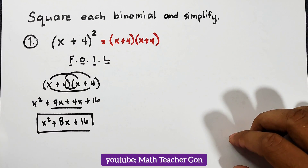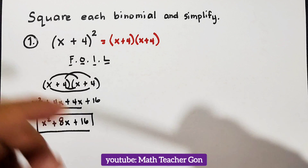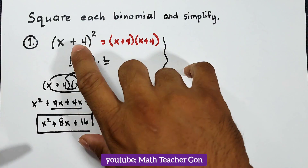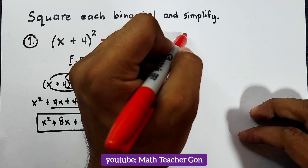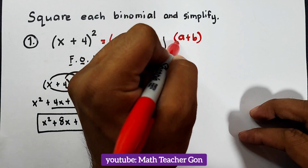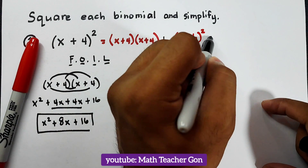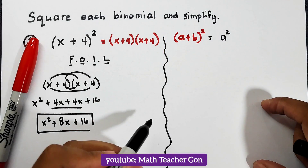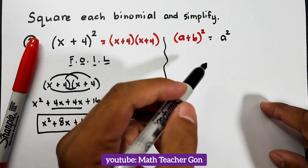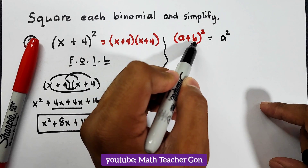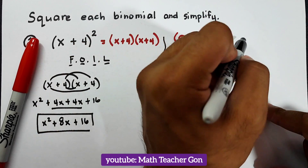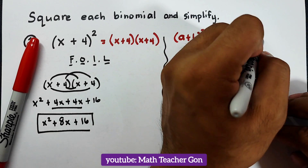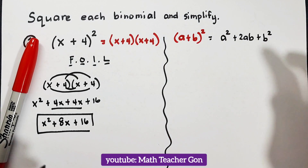For today's video we will use the square of binomial pattern to shorten the process. Our pattern is: if we have a plus b squared, first square the first term to get a squared; then to get the second term, multiply a times b and then multiply by 2, giving plus 2ab; then square the last term to get plus b squared.